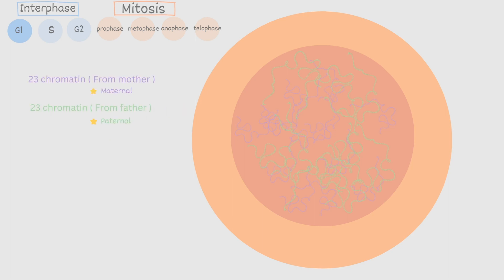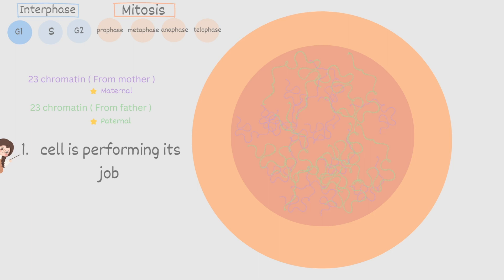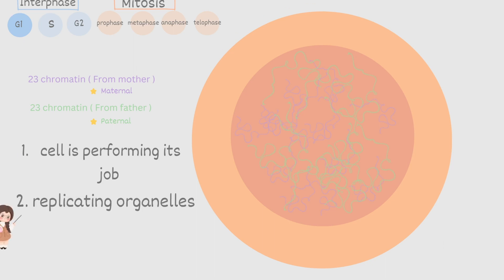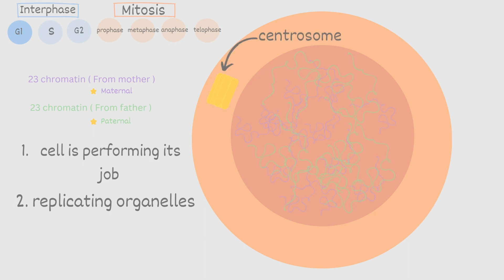The first major thing that happens in G1 is the cell is performing its normal tasks — basically doing its normal job. The second thing is it begins to replicate organelles, because eventually this parent cell is going to split into two cells called the daughter cells. These daughter cells need to be identical to the parent cell, so every organelle must be duplicated. One of the major organelles it duplicates is the centrosome, which has a huge role in DNA replication and will assist in moving the chromosomes. Don't get centrosomes confused with centromere — centromere is at the center of each chromosome, while the centrosome is a structure outside the nucleus that eventually creates microtubules to assist with moving the chromosomes.